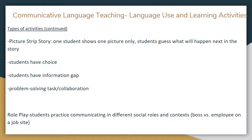Another activity is the picture strip story, where one student has access to a story told through pictures set in a strip, like a comic strip, but only one strip is shown at a time. The student who has seen the whole strip knows what's going to happen and only shows one strip to the other student, giving them a chance to guess what will happen next. Students have choice, there's an information gap since students with access to only one part don't know what happens next, and it's a problem-solving task. Students collaborate to predict the story, then check their prediction when all pictures are revealed.